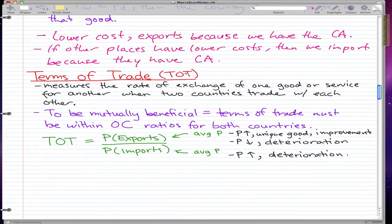The next thing I'll talk about is the formula. The terms of trade formula is the price of exports over the price of imports. If the average price of exports go up, that means the world price goes up and it's a unique good and there's an improvement. But if it goes down,